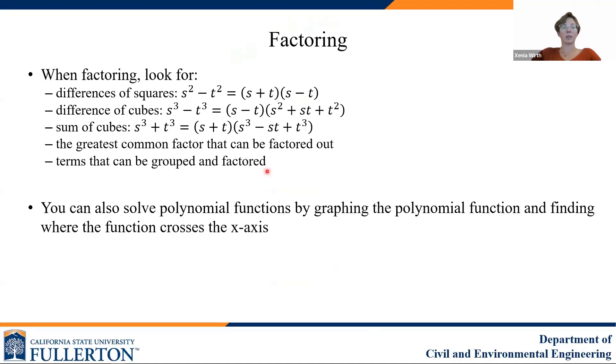When factoring, here are some things to look for that will help you get started. Look for any difference of squares, because that has an immediate factor here. Look for difference of cubes, which has this factoring. And the sum of cubes here is always going to be factored like this. Look for any greatest common factor that can be factored out initially to simplify the expression. And look for terms that can be grouped and factored individually. If you have four different terms, and two of them have a greatest common factor, and another two have another common factor, you can separate those out and factor them.